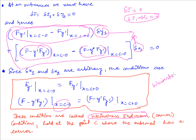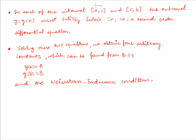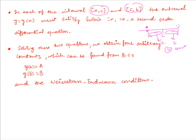The Weierstrass-Erdmann conditions state that f_{y'} is continuous at c (equal from left and right), and f - y' f_{y'} is also continuous at c. To solve such problems, we divide [a,b] into two parts, solve Euler's equation separately on each, obtaining two constants per piece — four total. With two boundary conditions and two Weierstrass-Erdmann conditions, we have four equations to determine the four constants. In the next video we will look at examples for clarification.